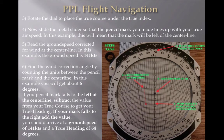Now we need to read the ground speed corrected for wind at the centre line. In this example, the ground speed, as you can see, is 141 — 140 and the smallest increment, so 141. To find the wind correction angle, count the units between the pencil mark and the centre line — that little red dot to the bottom left, just around the 125 mark. In this example you should get about 6 degrees. If your pencil mark falls to the left of the centre line, take away. If it falls to the right, add. Left minus, right add — as long as you can remember that, you'll never go wrong.